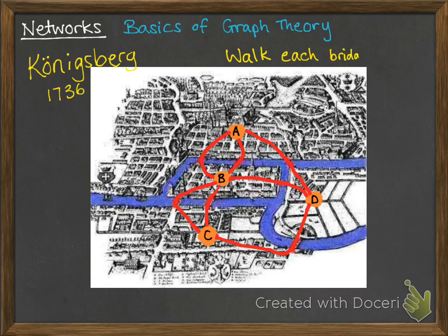The people of Königsberg had this problem where it was a bit of a tourist attraction to try and walk each bridge once and not repeat any bridges. They were trying to work out if it was possible to get between all four landmasses crossing each of the bridges just once only. It's kind of like the problems you did in primary school where you had to try and draw something without taking a pencil off the paper.